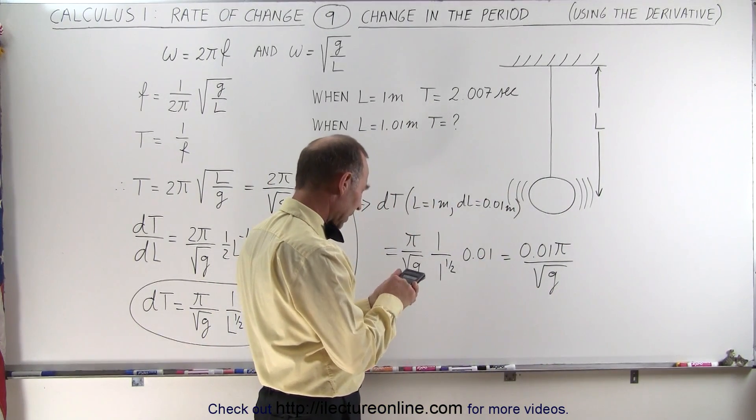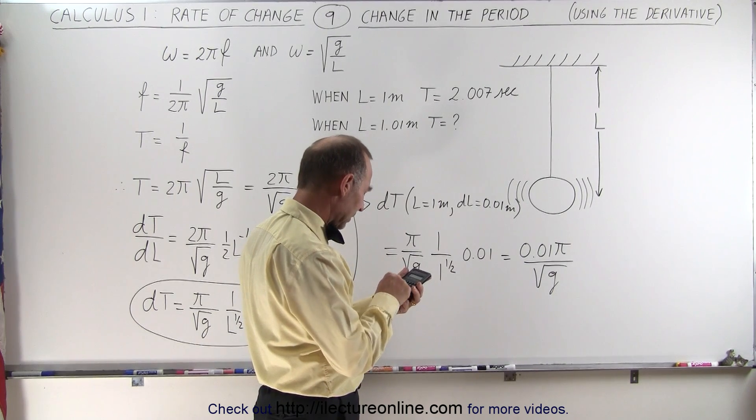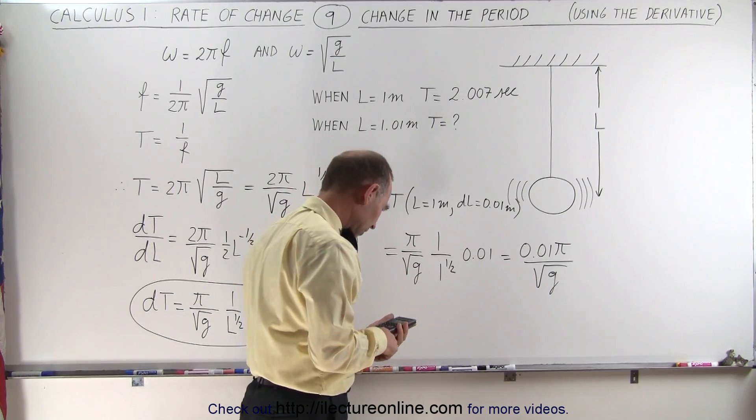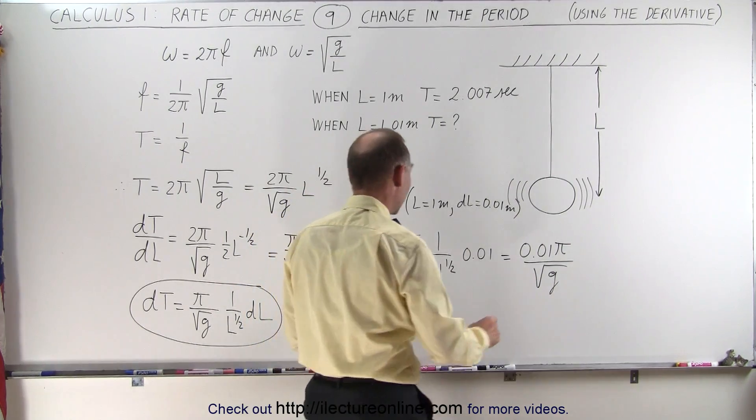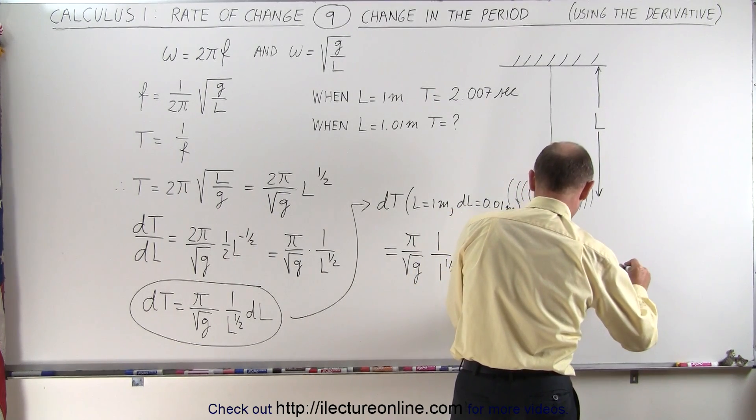At this point, I'm going to resort to a calculator. So we have the number π, and times 0.01, and divide by 9.8, take the square root of that, equals, and we end up with a change in the period of 0.0100.